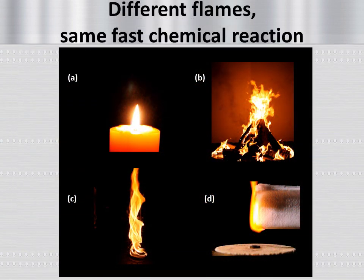Now we know that even though flames can look very different, they all result from the same kind of fast chemical reaction between fuel and air. They release energy in the form of heat and sometimes light. What changes in different flames is the fuel and oxidizer, how they come together, and how this reaction releases energy.